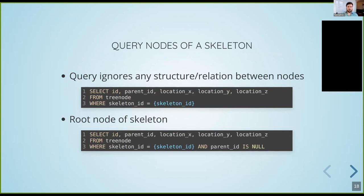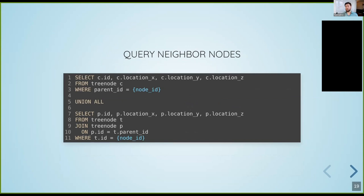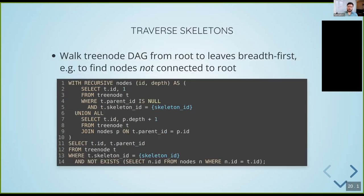To give you an idea of what you can do with a simple data structure like this, here are some example queries. Of course you can get all the nodes of a particular skeleton — skeleton and neuron mean the same in this context — along with their locations. We can get only the root node of a particular skeleton. We can query neighbor nodes of a particular node of interest, getting all the children of a node as well as the parent node.